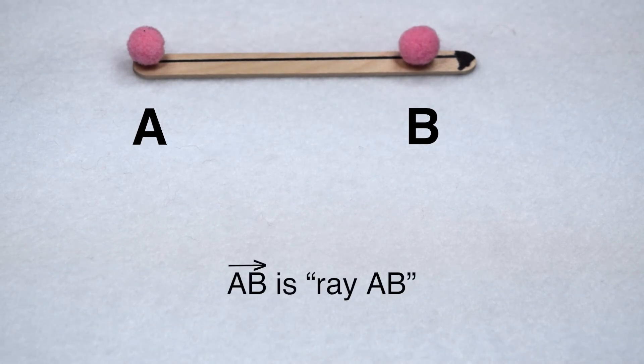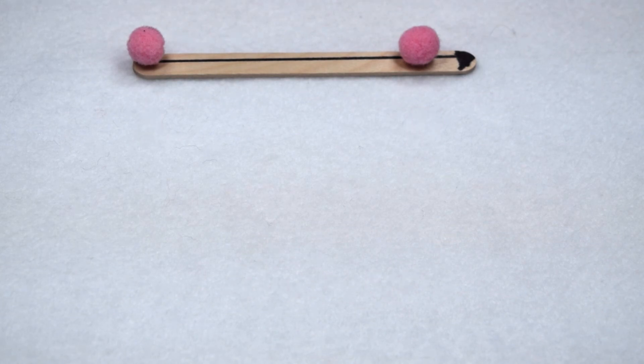In order to show that it's a ray, we would need to make sure we put a ray over the name symbol so other people would know that when they read it. From here, we can take what we know about points, lines, line segments, and rays and combine them in different relationships.